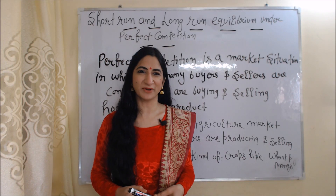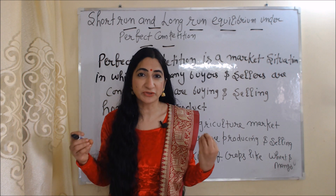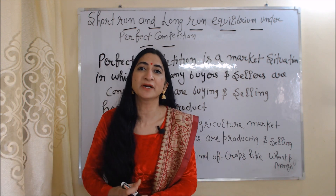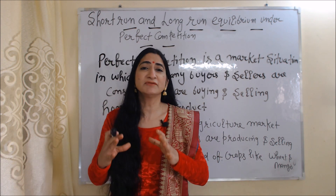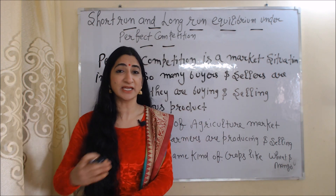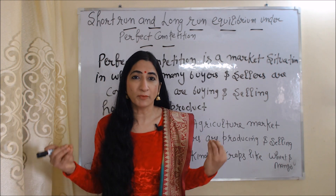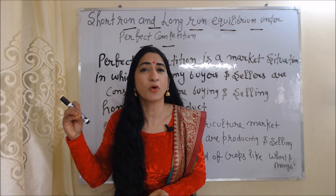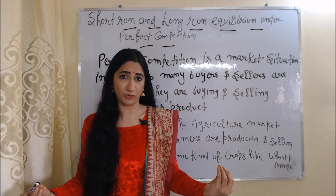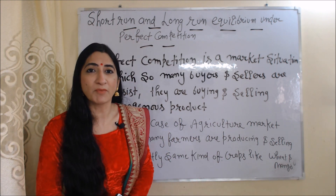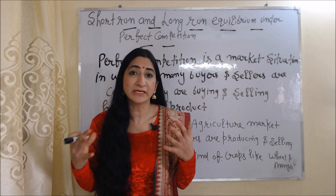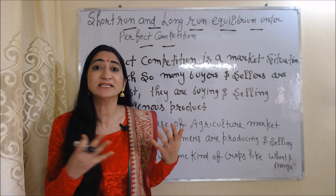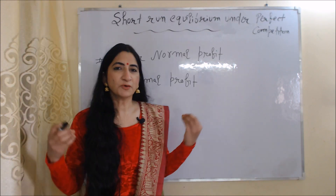Hello everyone, my name is Minis. Today we are going to talk about short-run and long-run equilibrium under a perfect competition market. Perfect competition is a market situation in which so many buyers and sellers are present, buying and selling a homogeneous product — meaning exactly the same kind of product. For example, in an agriculture market, many farmers produce and sell the same crops like wheat and mango, and many buyers purchase them.